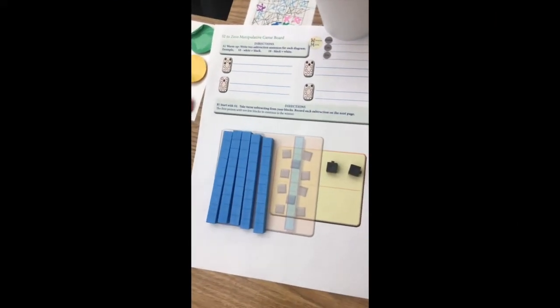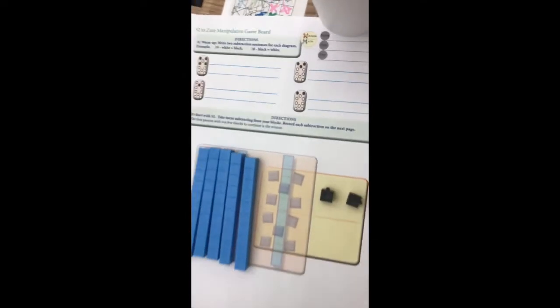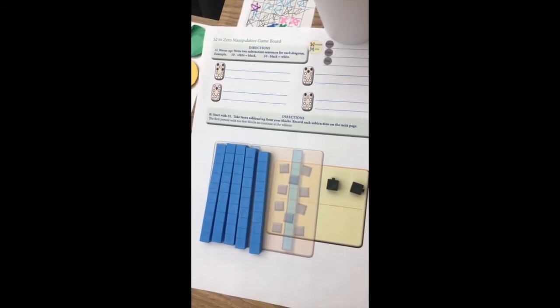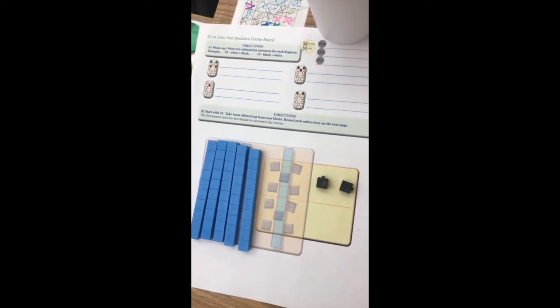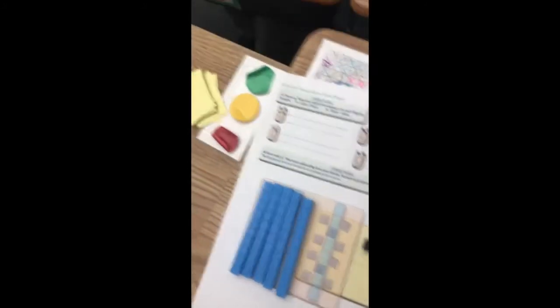Okay, we're going to play a game called 52 to 0. We're starting out with this game sheet. We start out with 5 sticks, 2 ones. We are going to draw a card from the pile.